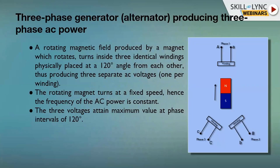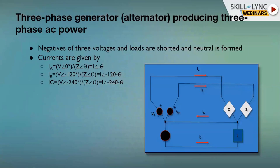The synchronous speed formula is Ns = 120f / P, where f = 50 Hz and P = number of poles. A thermal power plant typically uses two poles with a very high rotor speed, while a hydro generator uses more poles — 36 or 48. The three voltages developed in the three windings are displaced by 120 degrees and attain maximum values at phase intervals of 120 degrees.